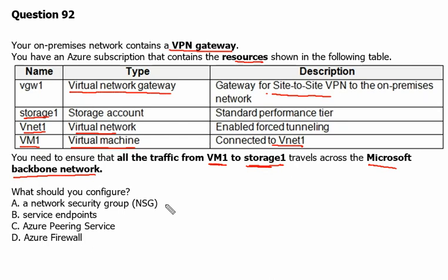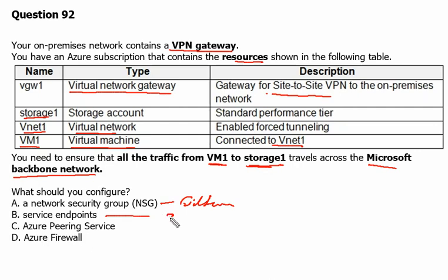A network security group is used for filtering traffic between Azure resources in an Azure virtual network, so we are not looking for any filtration here. Rather, we are looking for connectivity using the Microsoft backbone network. Option B is a service endpoint, which is used to secure and provide direct connectivity to Azure services using the Azure backbone network. Therefore, Option B is correct here.